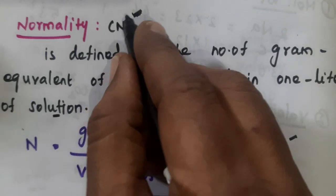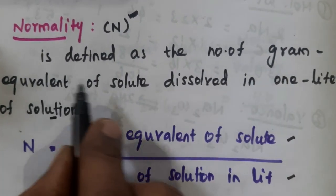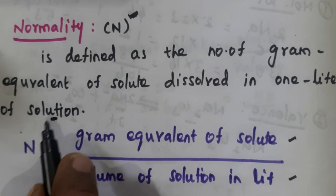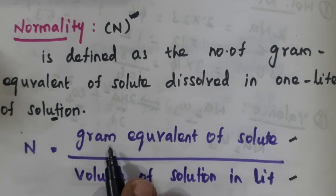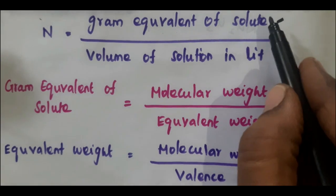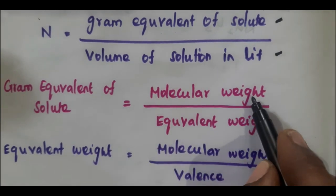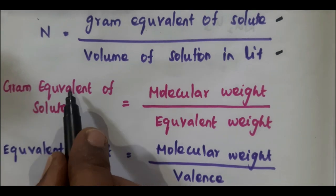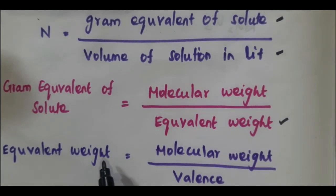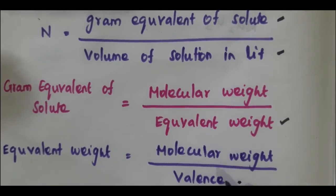First, what is normality? Normality is denoted by the symbol N. It is defined as the number of gram equivalents of solute dissolved in one liter of solution. Normality N equals gram equivalents of solute divided by volume of solution in liters. Gram equivalents of solute equals molecular weight divided by equivalent weight, and equivalent weight equals molecular weight divided by valence.